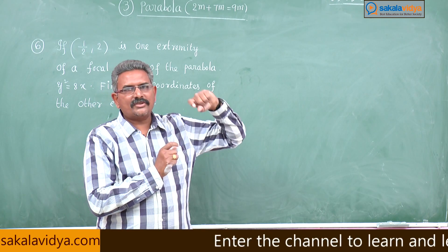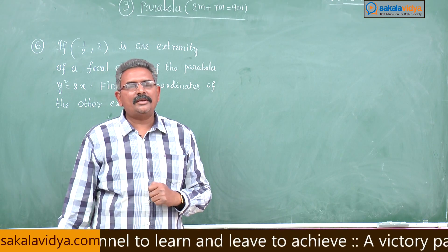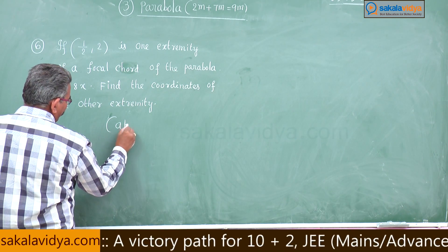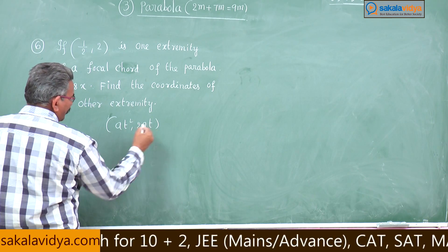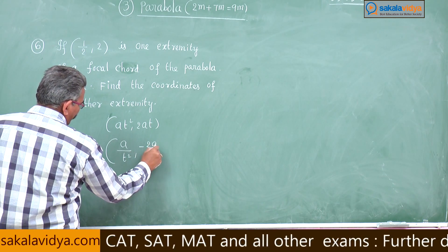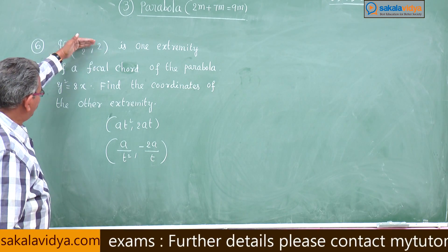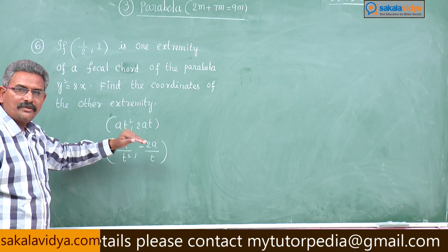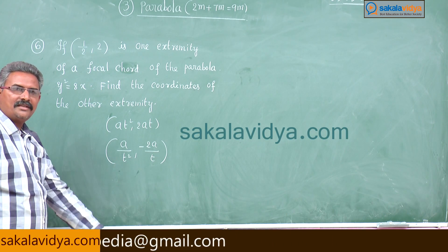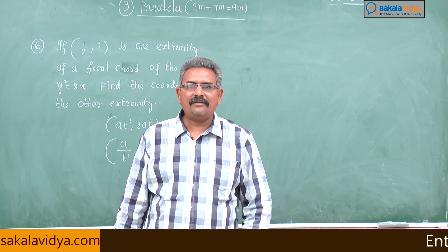If one of the extremities of the focal chord of the parabola is given, the other extremity we have to find out. We have the formula: if (at², 2at) is one extremity, the other extremity is given by (a/t², -2a/t). The given extremity is equated to (at², 2at), from which we find a and t values.